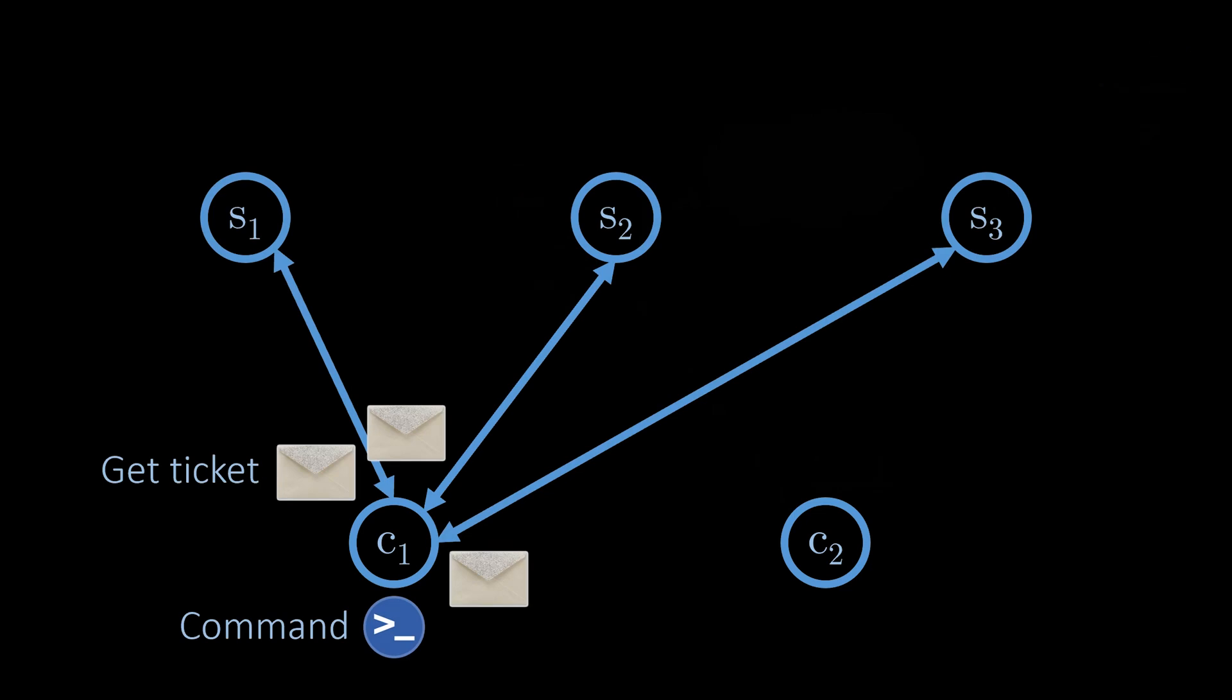We will now attempt to build a simple protocol using tickets. The goal of the protocol is to execute a single command for the sake of simplicity. As we will see, the Paxos protocol is also used to agree on a single command. Paxos can be extended for the case of multiple commands, but in this video, we focus on executing a single command.